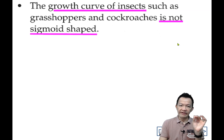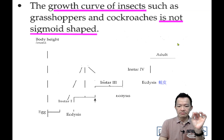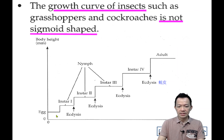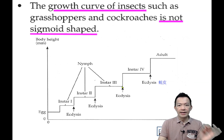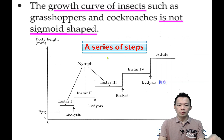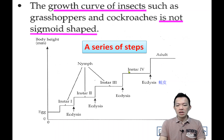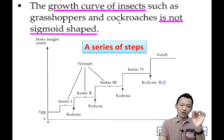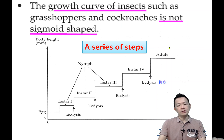So how is the shape? If the shape is not a sigma, how do we describe it? We don't call it a sigmoid shape. So copy on your notes: the shape will be called a series of steps. You can see step one, step two, step three — it's like a row of stairs. So this shape is called a series of steps.